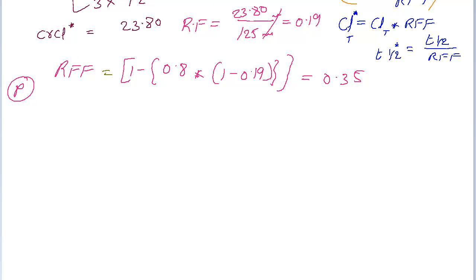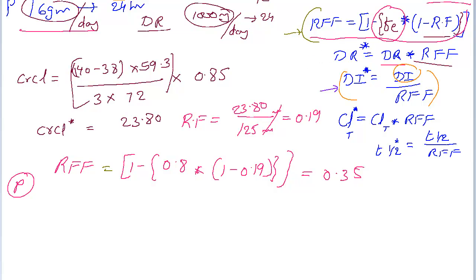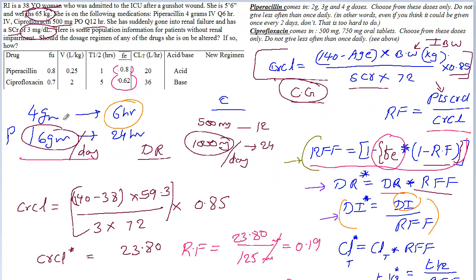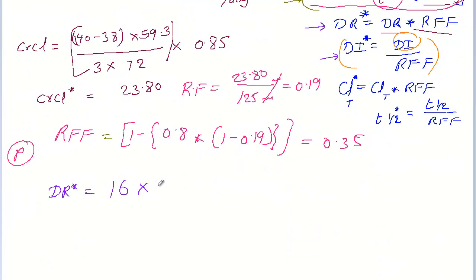The next step is to calculate the new dose rate. The dose rate for the renal-impaired patient equals the normal patient's dose rate times the renal fudge factor. The normal dose rate is 16 grams per day, so 16 times 0.35 gives approximately 6 grams per day for this new renal-impaired patient.